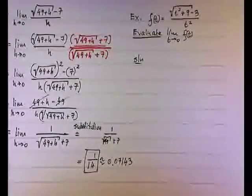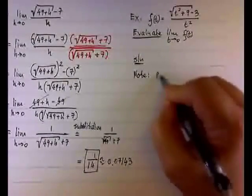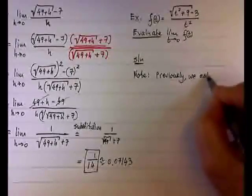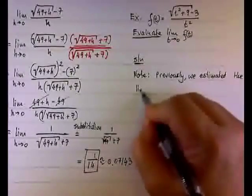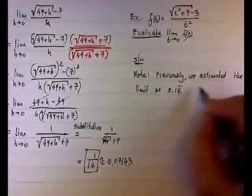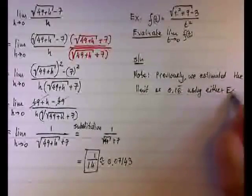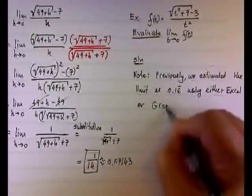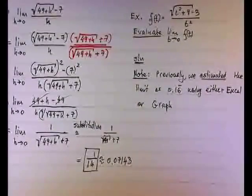So we already done it previously by graph. Note here, previously we estimated the limit as 0.16 repeated using either Excel or graph. But this was estimate. We estimated.